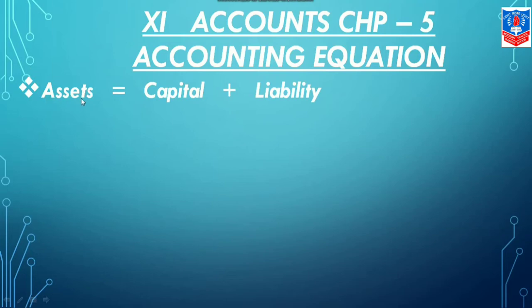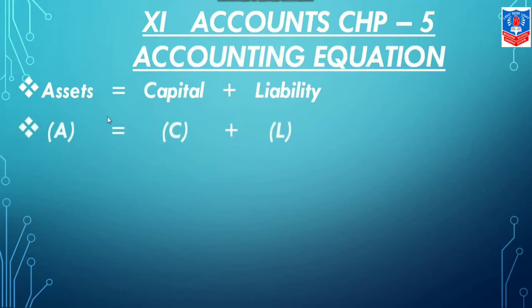Assets is on the left-hand side, equals capital plus liability. In another way we can say: A equals C plus L. There can be the following effects on A equals C plus L, which are mentioned below.